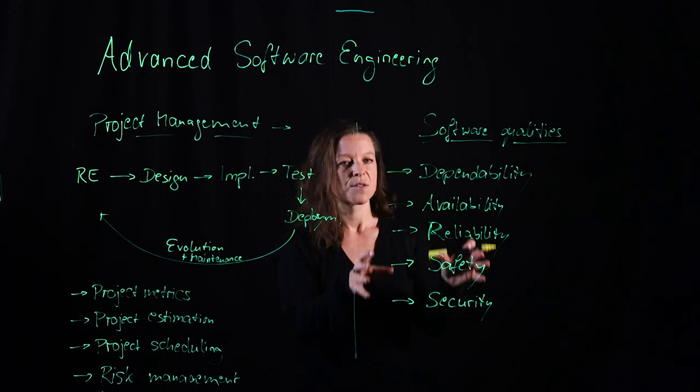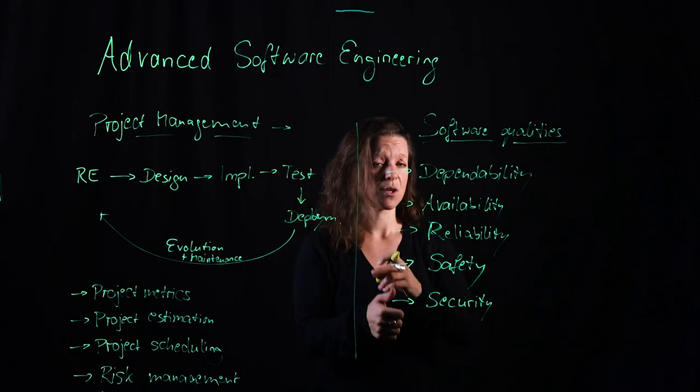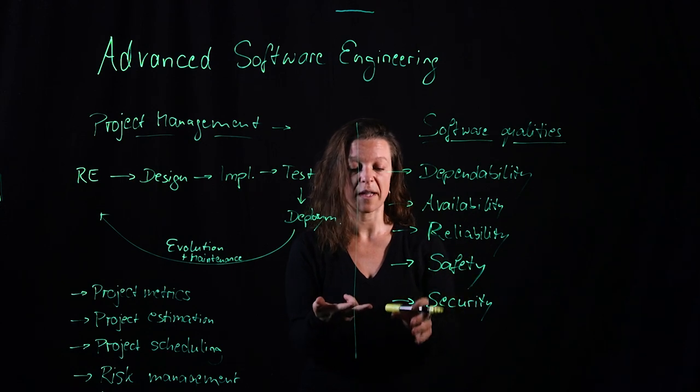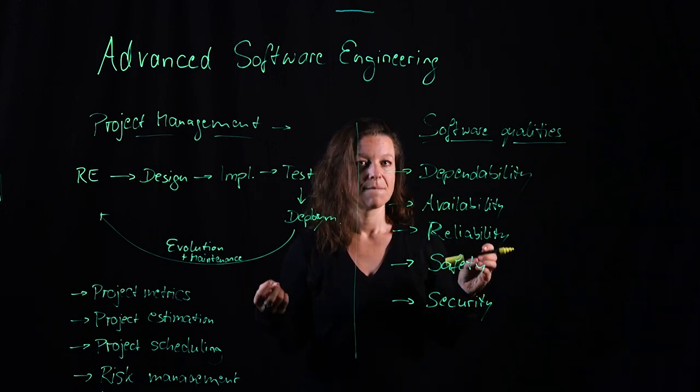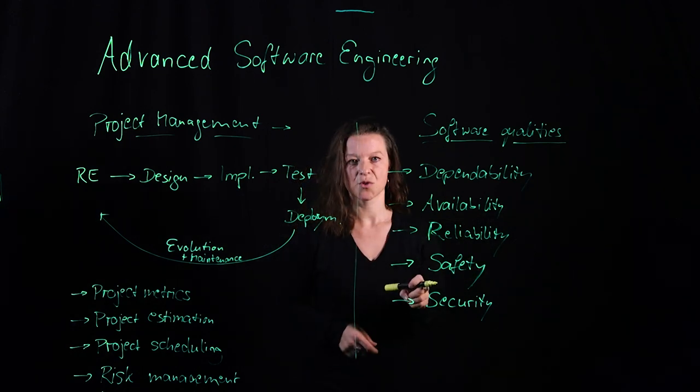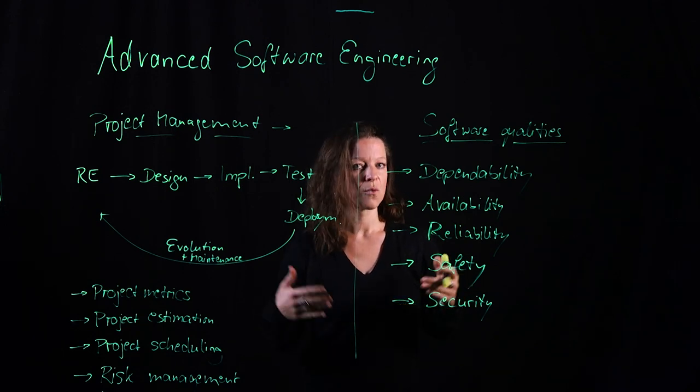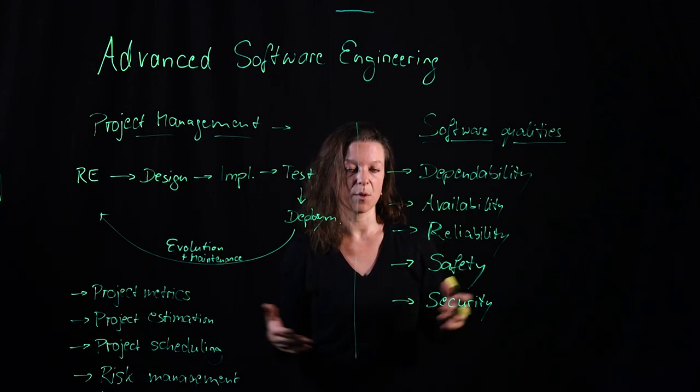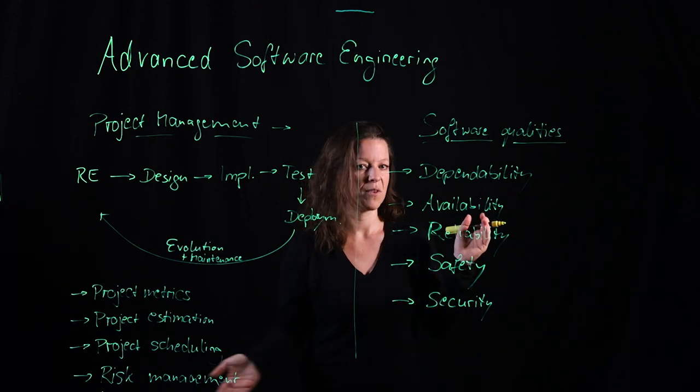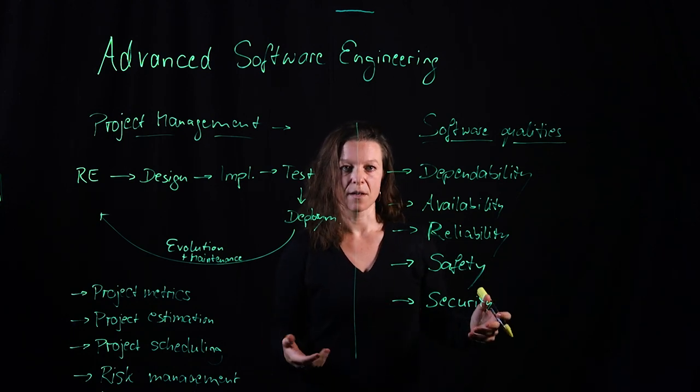And then we can take all the protective measures that we want in the world. We can install firewalls, we can have great cryptography, we can have super safe algorithms. Maybe there is still one really, really smart hacker out there who still manages to run a cyber attack on our system. And there are a couple of attacks that are really hard to protect against. For example, a denial of service attack where we just send so many requests to a software system from very different places that the server can just not handle a load at some point anymore.